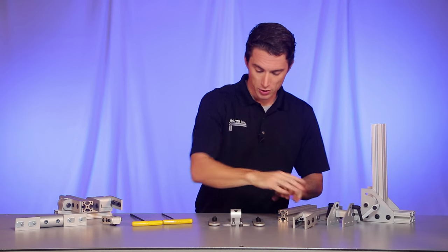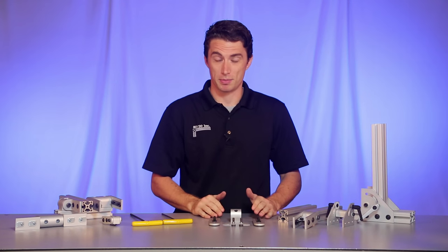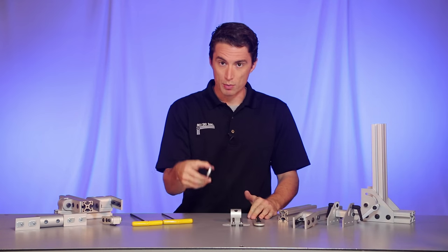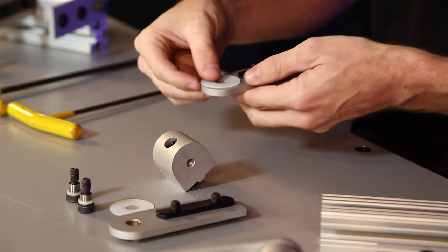Now for our example, we're going to start with individual components and assemble a dynamic pivot ourselves. So we'll grab one of our arms, take a washer and put it on the T-nut side.